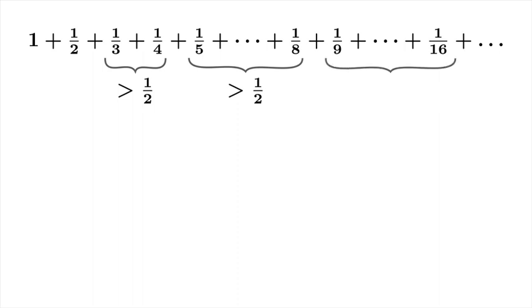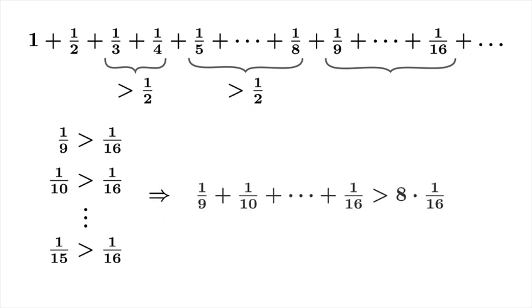How about these next eight terms? Well, 1/9, 1/10, and so on, all the way up through 1/15, they're all greater than 1/16. So that means when you add these eight terms, you have to get something that's bigger than eight times 1/16, which is 1/2. So these eight terms add up to something greater than 1/2.